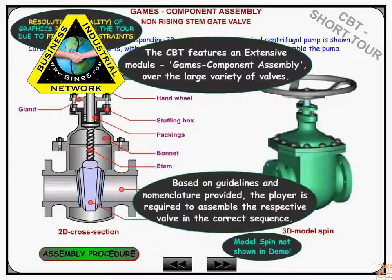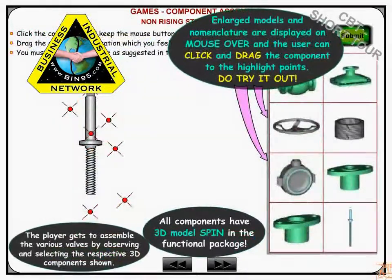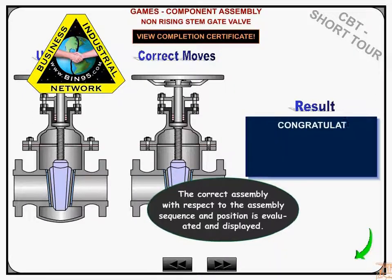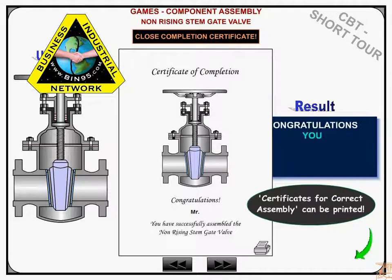This computer-based training features an extensive module: Games Component Assembly. Based on guidelines and nomenclature provided, the player is required to assemble the respective valve in the correct sequence. The player assembles the various valves by observing and selecting the respective 3D components shown. The correct assembly with respect to the assembly sequence and position is evaluated and displayed. Certificates for correct assembly can be printed out.